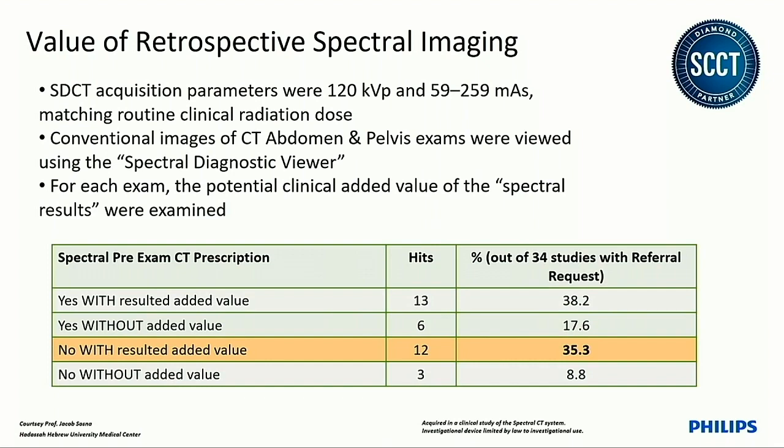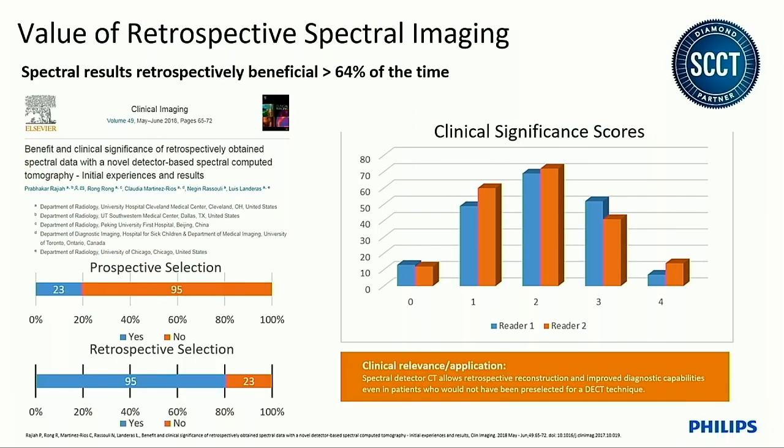A second similar study went further in depth. Patients were prospectively selected for dual energy — about 20%, or 23 patients — but after the scan, retrospective review showed a complete flip: 80% of the time clinicians said they wished they had it. A clinical significance score was also assessed, showing that greater than 64% of the time there was a rating of 2, 3, or 4 on clinical significance, where 4 was highly relevant and could change patient management.